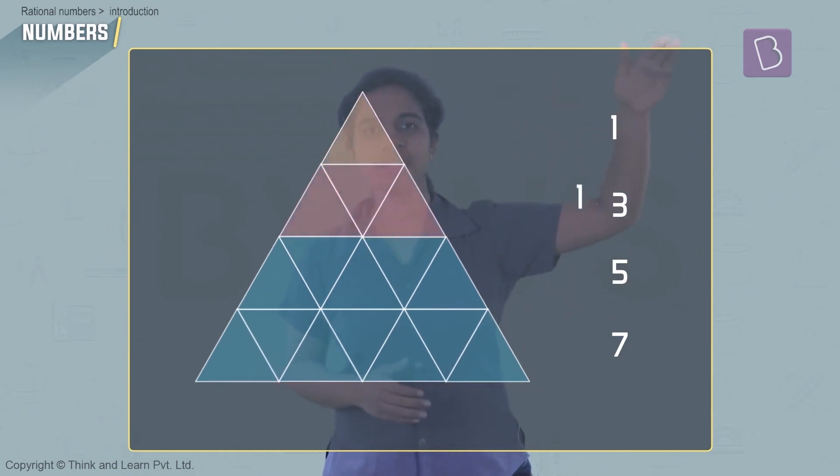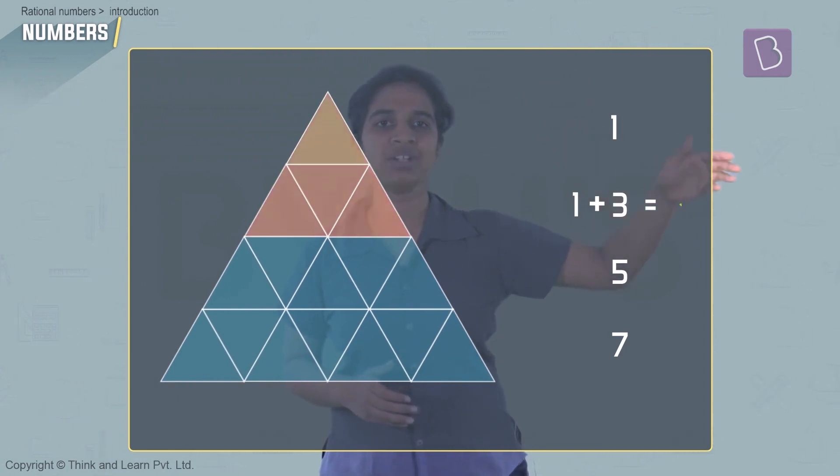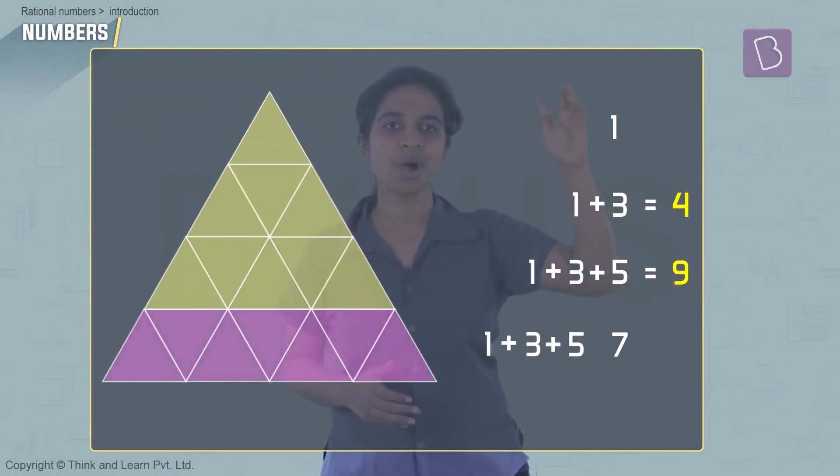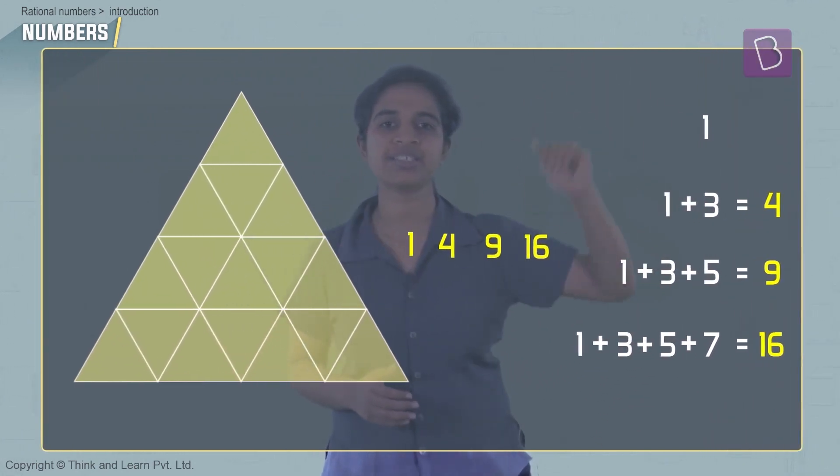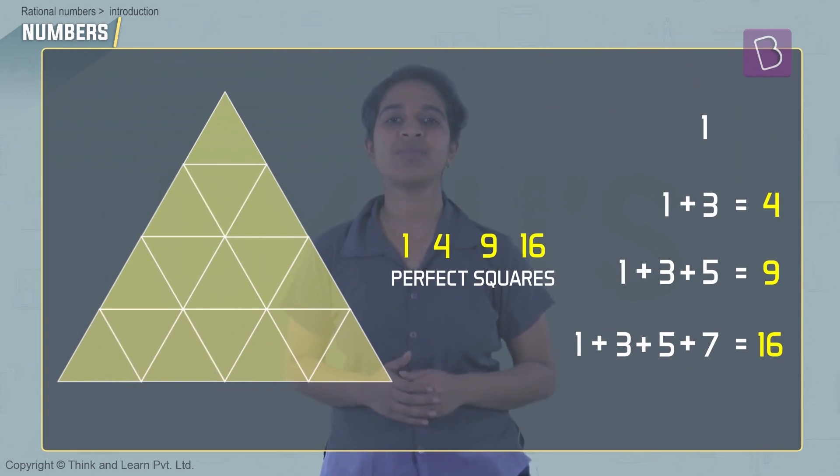Now let's add them and see. 1 + 3 you add, you'll get 4. 1 + 3 + 5 you'll get 9. 1 + 3 + 5 + 7 you'll get 16. What are these? Nothing but square numbers.